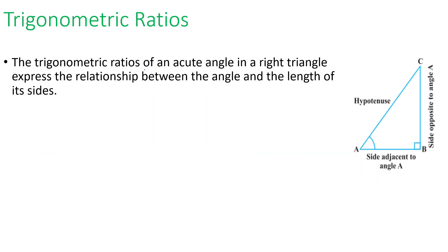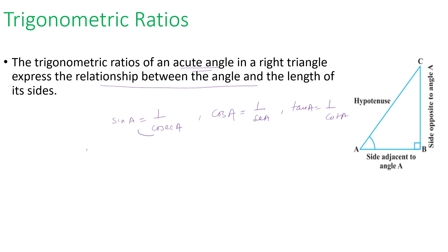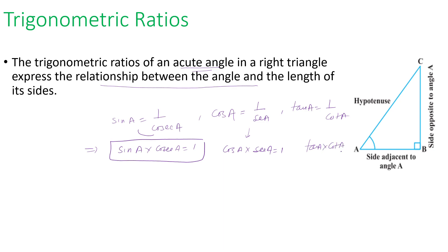The trigonometric ratios of an acute angle in a right triangle express the relationship between the angle and the length of the sides. Since sine A is reciprocal to cosec A, cos A is reciprocal to sec A, and tan A is reciprocal to cot A, we can write: sine A × cosec A = 1, cos A × sec A = 1, and tan A × cot A = 1. These are known as trigonometric identities.